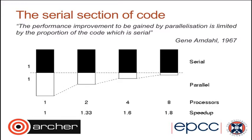We can carry on like this and work out the speed-up for more processors. On eight processors, the speed-up is just 1.8. If we idealize to a very large number of processors so the parallel part takes zero seconds, we are limited by the serial part — no matter how fast the parallel part runs, the runtime will still be one second. So the maximum possible speed-up in this case is two seconds divided by one second, which is 2. And you can see the speed-up is tending towards 2.